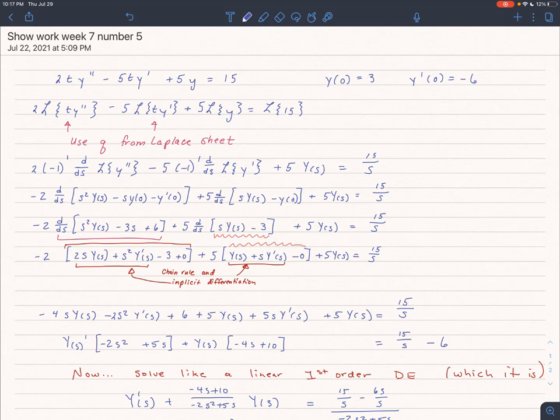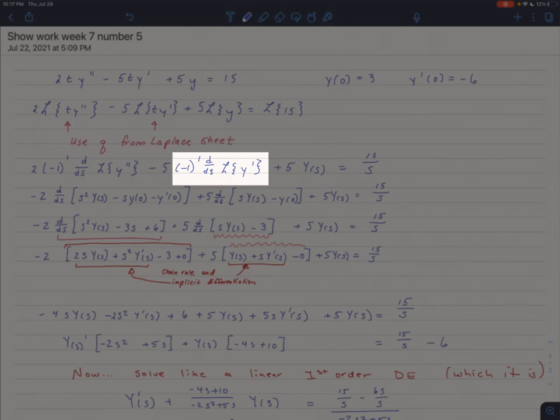We're going to have negative 1 to the 1 power again because we have t to the first times the Laplace transform, excuse me, times the derivative with respect to s of the Laplace transform of y prime.